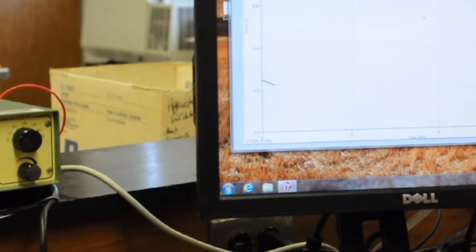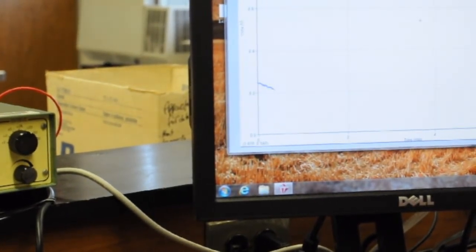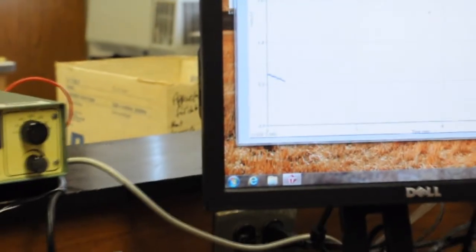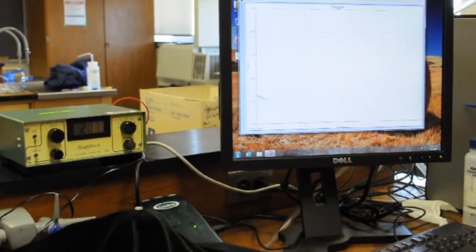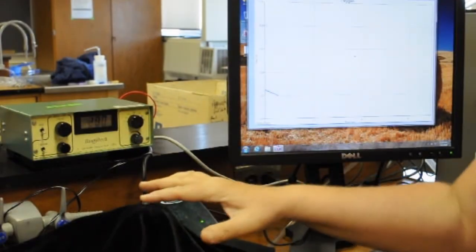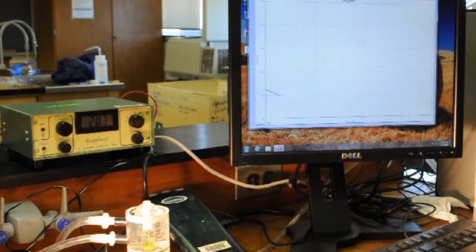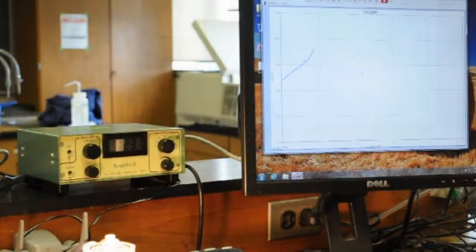Since your sample is in the dark you should see either a flat line or a line with a negative slope. A negative slope indicates your sample is consuming O2. To check for photosynthetic activity remove the black cloth and turn on the light. If the cells are evolving more O2 than they are consuming you will get a line with a positive slope.